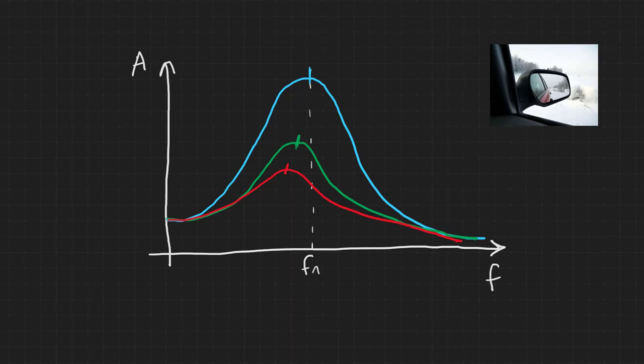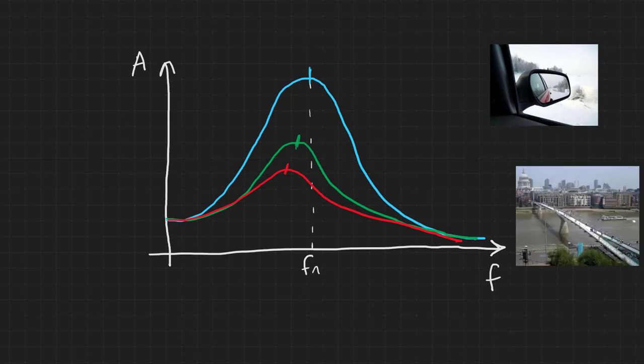Resonance has also famously affected some bridges. The Millennium Bridge in London suffered resonance shortly after it opened, as pedestrians walking on it swayed in time with the bridge's natural oscillations, causing a resonance that made these vibrations larger and larger. Eventually the problem was fixed by installing massive dampers at either end of the bridge.